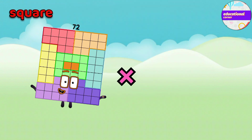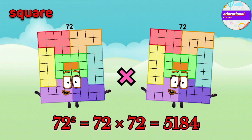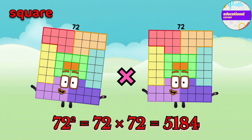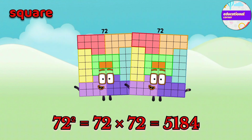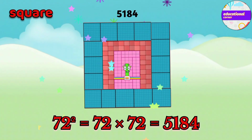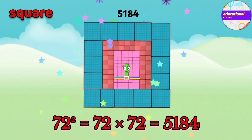72 multiply by 72. The square of 72 is 5184.